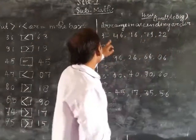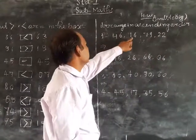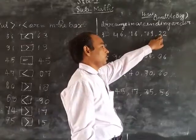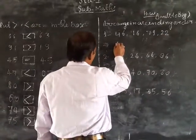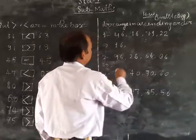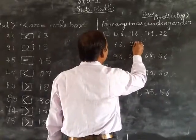First number, 46, 18, 79, 22. So, small number is 16. This is small. Small number, 22.